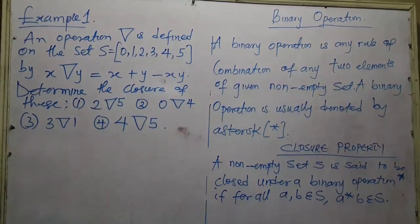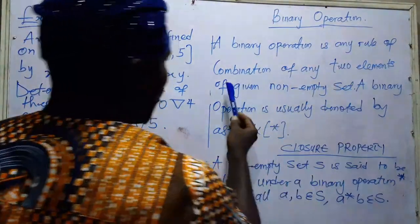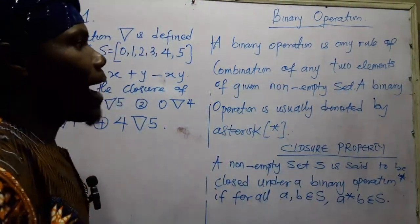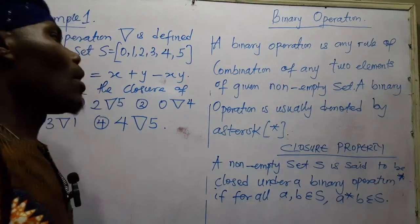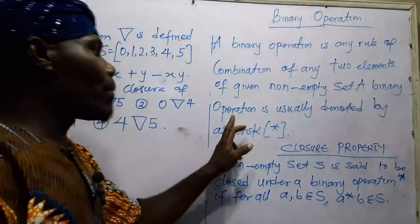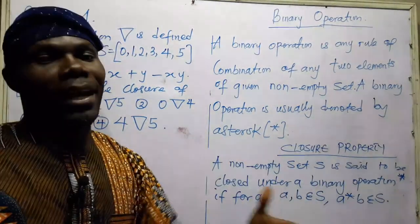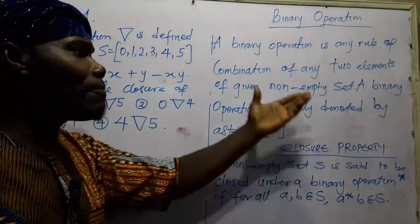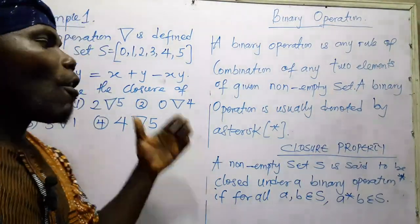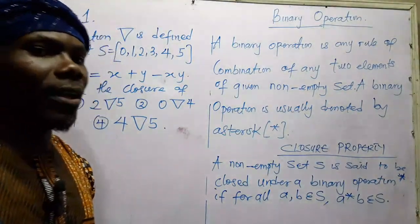Today we are talking about a binary operation. A binary operation is any rule of combination of any two elements of a given non-empty set. A binary operation is usually denoted by an asterisk. We have many properties of binary operation to help you understand deeply what is meant by binary operation.